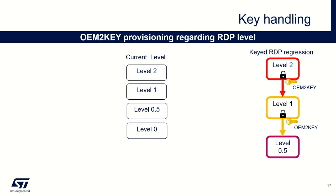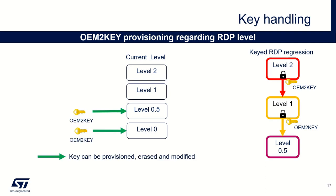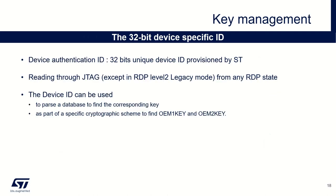Regarding provisioning rules for the OEM2 key: the OEM2 key allows control of regression from level 2 to level 1 and from level 1 to level 0.5. If my target is in RDP level 0 or in level 0.5, I can provision, erase and modify the OEM2 key. If my target is in RDP level 1, I can only provision the OEM2 key. Of course, in level 2, nothing can be done. To ease key management, STM32U5 integrates a 32-bit device-specific ID. This one is provisioned by ST and can be read through JTAG in all RDP levels except level 2 if you are in legacy mode. This value could be used to associate key values with a STM32, or as part of a specific cryptographic scheme to derive OEM key values.